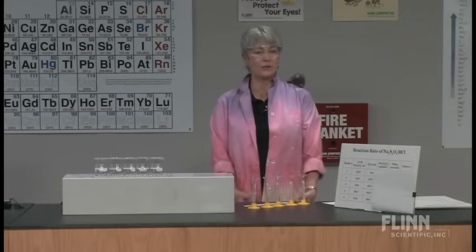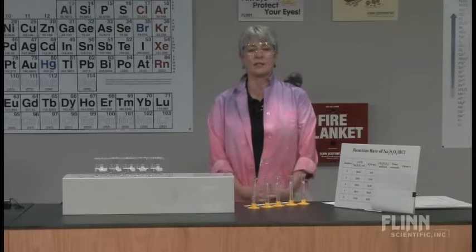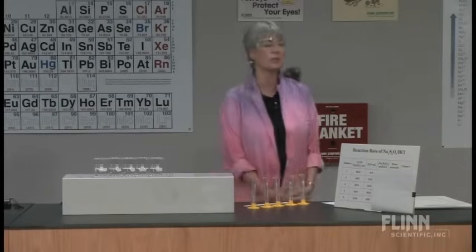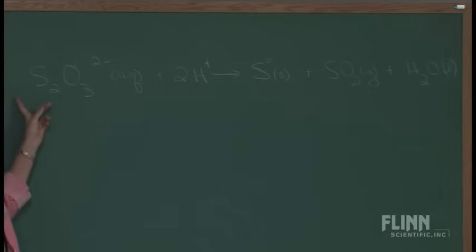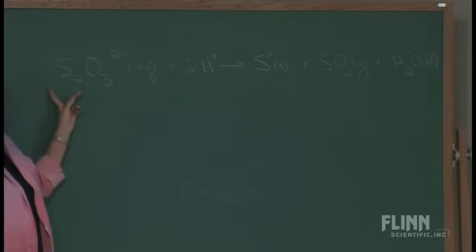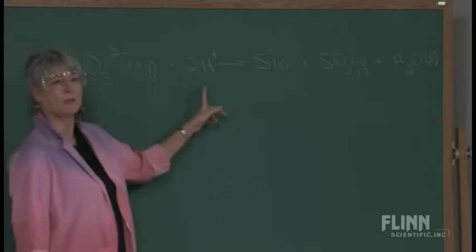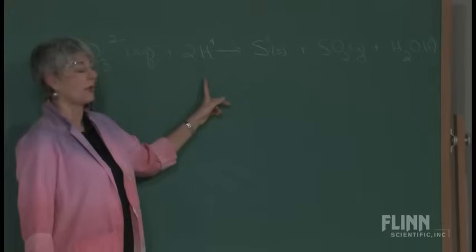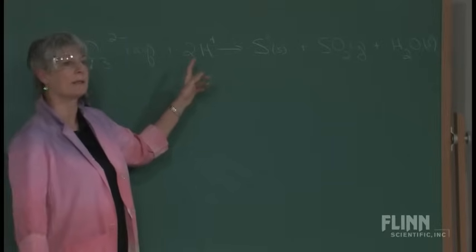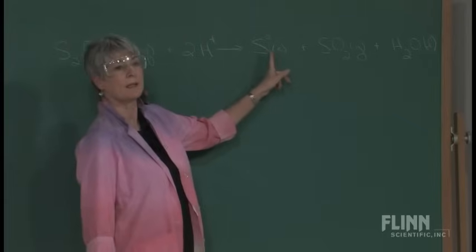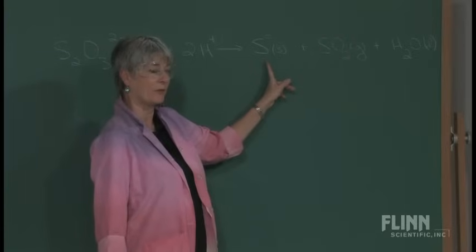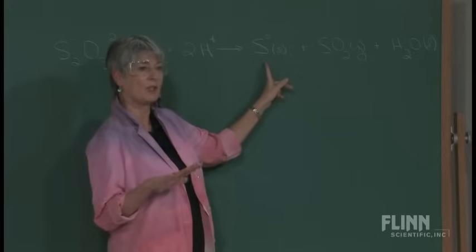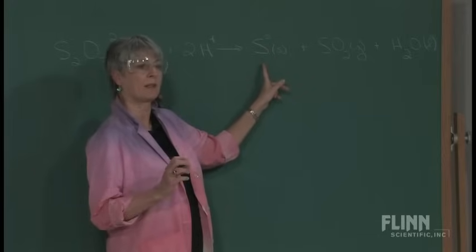It can be done on the overhead projector, and all the students can gather data together, or you can have them do it back in the laboratory. It's a clock reaction, essentially. Let me go to the board for a minute and write the equation. We're going to take sodium thiosulfate — we've got a 0.15 molar solution — and we're going to add to that hydrochloric acid. I've only got the net ionic equation because the sodium and the chloride ions are spectators. This forms solid sulfur, sulfur dioxide, and water. This solid sulfur is the colloid — it stays in suspension, and it'll eventually block the light coming through my beaker.